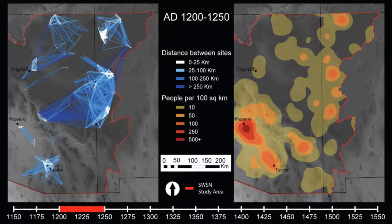For each slide, the map on the right shows estimated population density, with darker colors representing more people. The maps on the left show network connections between pairs of sites based on strong similarities in the proportions of decorated ceramic wares recovered at those sites.